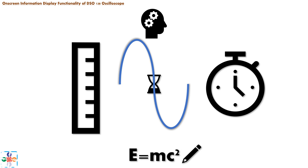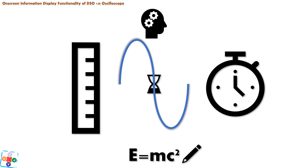Our oscilloscope wouldn't be much more than a toy if it couldn't automatically measure and provide information about a signal more reliably and accurately than having us take observations and measurements on our own and then do the math — calculating period, frequency, amplitude, and so on. Let's see how it does that.